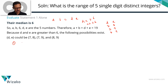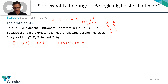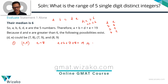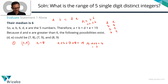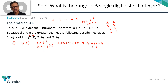For the second possibility, d = 7 and e = 9: a + b + 7 + 9 = 19, so a + b = 3. The only distinct single-digit positive integers that satisfy this are a = 1 and b = 2. So the range is e minus a = 9 − 1 = 8.